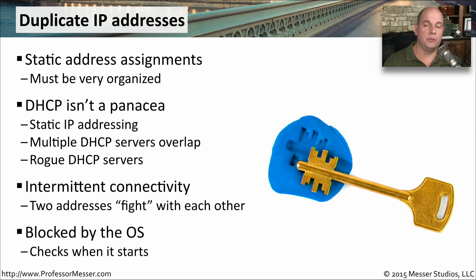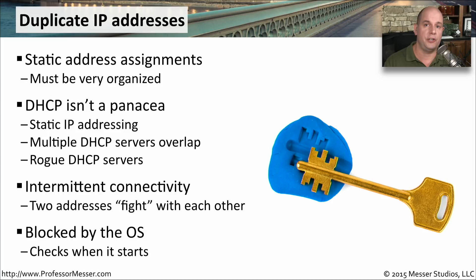Many operating systems will block you from using a duplicate IP address on a subnet. Before you're able to use the machine, it sends an ARP to your local subnet. If it receives a response, it knows that IP address is already in use, and it puts a message on your screen saying you're not able to use this IP address due to a duplication on the subnet.